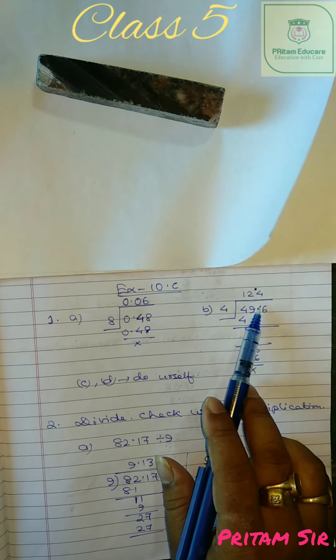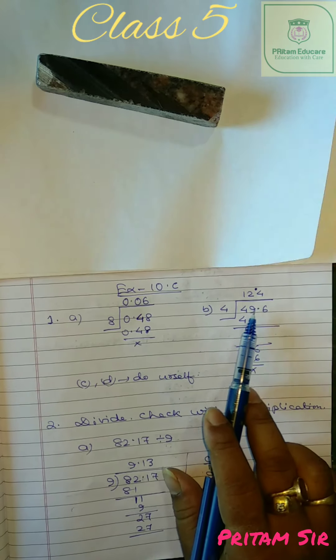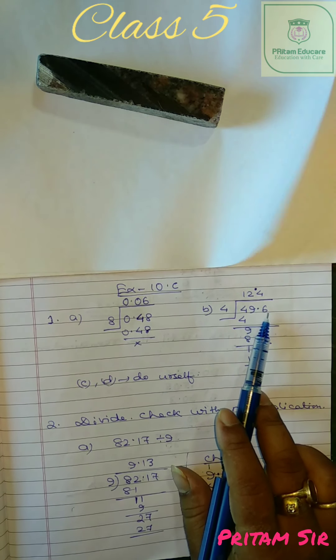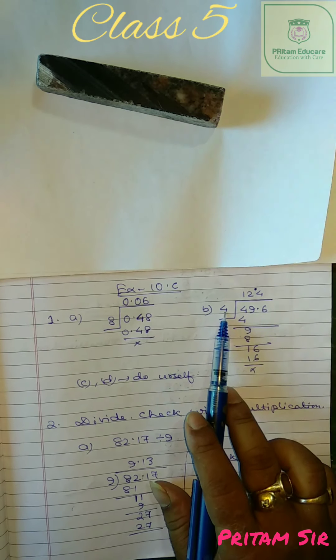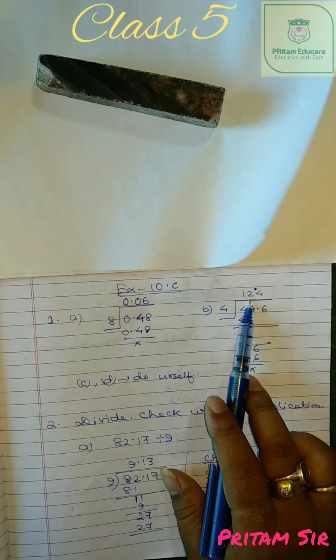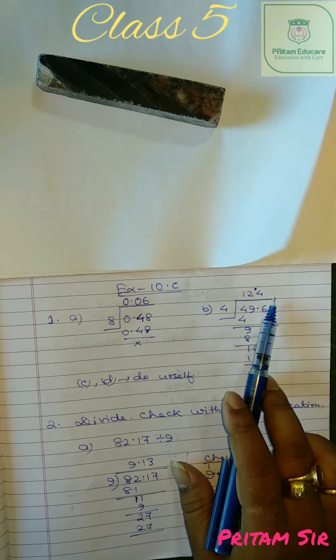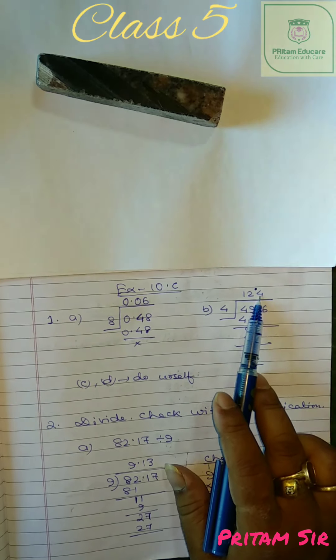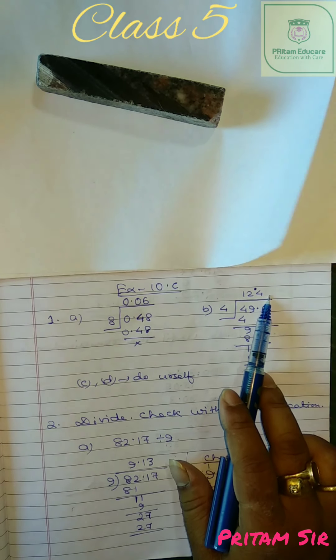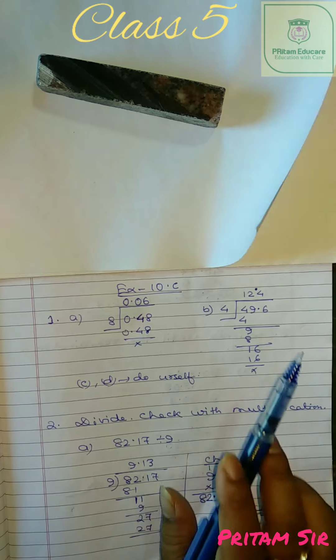From here easily we can understand where we have to place the decimal. Again in the next question you see 4 dividing 49.6. So here given 12, 12 and 4. After decimal one digit. So others you will do by yourself.